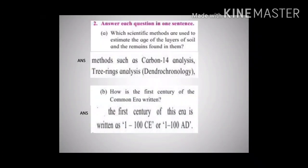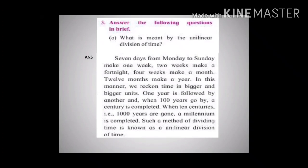Here are the question answers you are supposed to write. Answer each question in one sentence — the question is about methods such as carbon-14 analysis, tree-ring analysis, and dendrochronological methods. Also answer the following question in brief: What is meant by the unilinear division of time? Write your answers in your notebook and complete the notes.